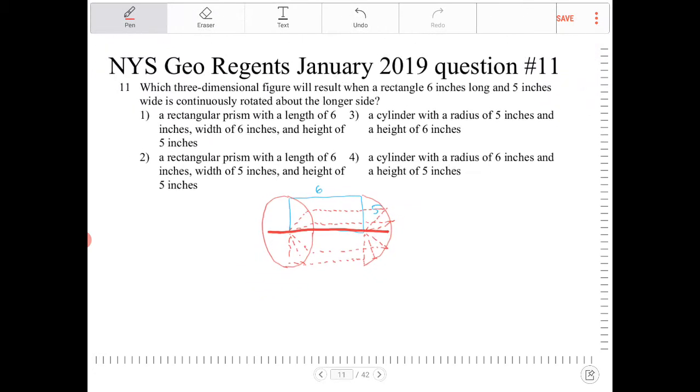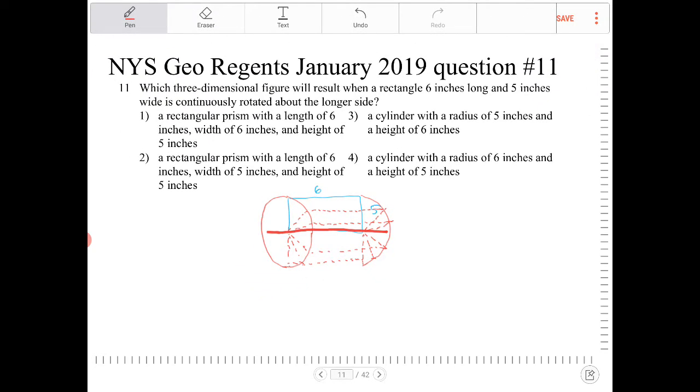So it's a cylinder where the height is going to be six and the radius is going to be five.